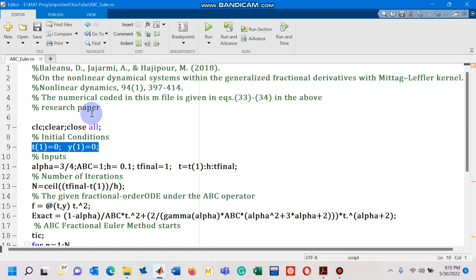which is given under Atangana-Baleanu-Caputo operation. So, let's go to MATLAB code and now you can see starting from line number 9, P of 1 is 0, Y of 1 is 0. These are the initial conditions.